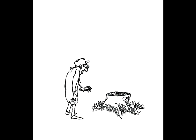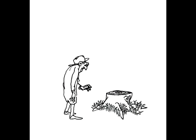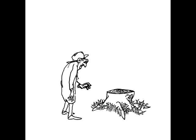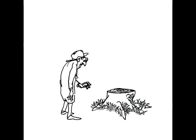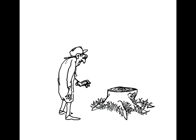My branches are gone, said the tree. You cannot swing on them. I am too old to swing on branches, said the boy. My trunk is gone, said the tree. You cannot climb. I am too tired to climb, said the boy.